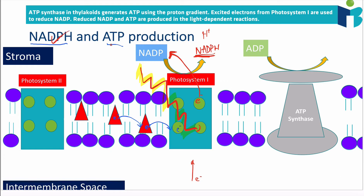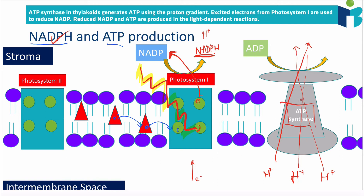To make ATP, we use the same process as in cell respiration: chemiosmosis. The proton gradient generated by pumping protons from the stroma into the thylakoid space allows protons to flow down their concentration gradient through ATP synthase — the same protein found in cell respiration — converting ADP into ATP. This process is given a slightly different name here: photophosphorylation.